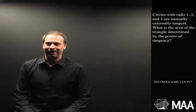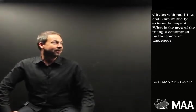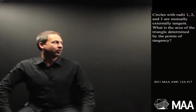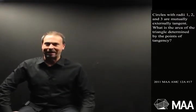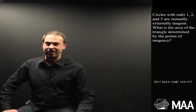G'day, welcome to another Curriculum Burst. Here's a curious geometry question for high schoolers. It goes as follows. Circles with radii 1, 2, and 3 are mutually externally tangent. What is the area of the triangle determined by the points of tangency?